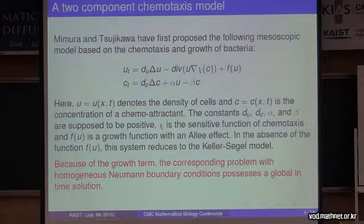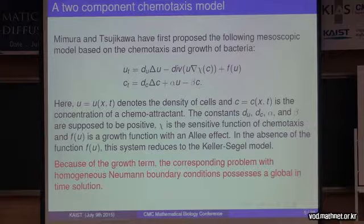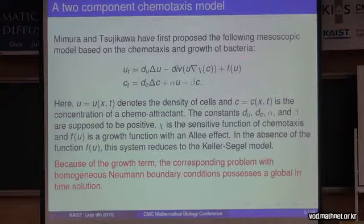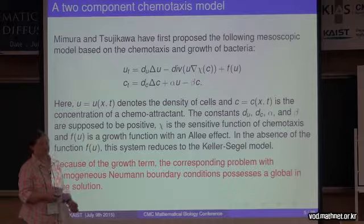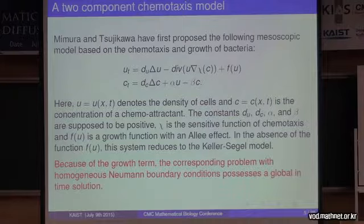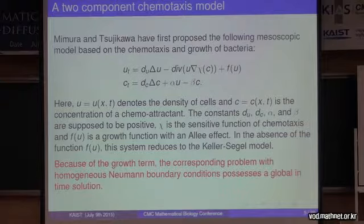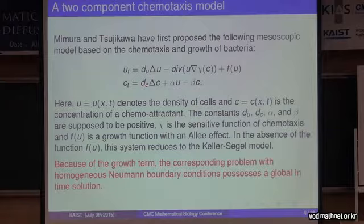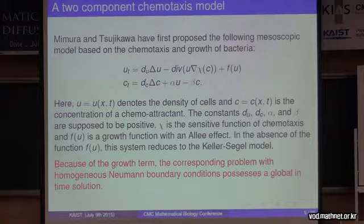What does the function F do for us? With the Keller-Siegel model, in some cases, the solution exists for all times. In other cases, it blows up. The term F of u, typically F of u equals u times one minus u squared, bistable, permits to keep the function u bounded. It prevents blow-up.